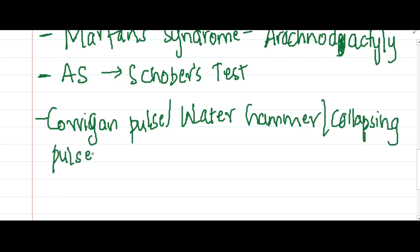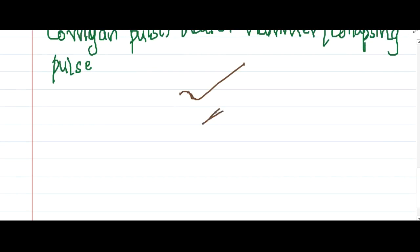In Corrigan's pulse, when you elevate the arm of the patient and feel the pulse, you see that the pulse increases markedly. Because the force of contraction of the left ventricle increases, the pulse feels as though you are beating something with a hammer — hence called water hammer or Corrigan's pulse.